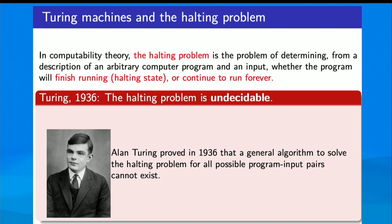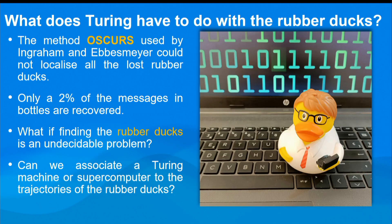You might ask: you are talking about DAGs, quantum computers, the halting problem, love messages — what is this talk about? What does Turing have to do with the rubber ducks? Well: the method of OSCURS used by Ingraham and Ebbesmeyer could not localize all the lost rubber ducks. Only 2% of messages in bottles are recovered. What if finding the rubber ducks is an undecidable problem? It would be undecidable if we can associate a Turing machine to the movement of these ducks.